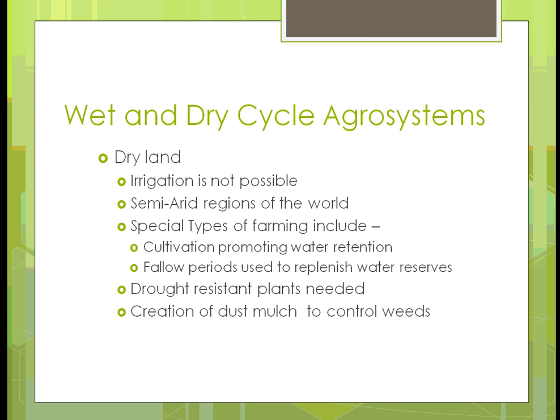In dry land areas, irrigation isn't possible because there's not enough water — these are semi-arid regions of the world. Special types of farming are used, including cultivating to promote water retention, where raised crop areas allow water to fall and reach root systems more easily. During fallow periods — when there's no crop — farmers try to replenish water reserves by storing it. They use drought-resistant plants adapted to dry conditions, and use dust mulch left after harvest to control weeds during those fallow periods.